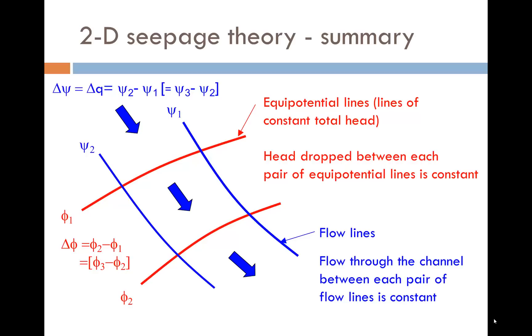The head dropped between each pair of equipotential lines is constant. The flow through the channel between each pair of flow lines is constant. This is the basis of constructing what are called flow nets, a graphical technique to solve seepage problems, such as the cofferdam problem on the first slide.